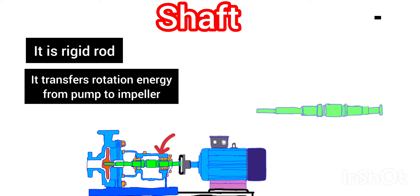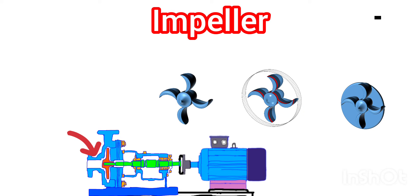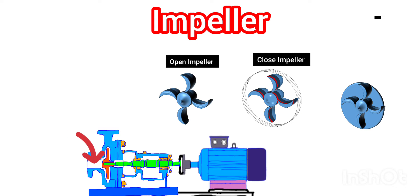So first, the motor takes electrical energy and converts it into rotational energy. The coupling acts as an interface between the pump shaft and the motor. The pump shaft then takes the rotational energy from the motor and delivers it to the impeller which is inside the casing.